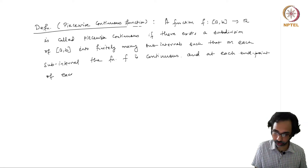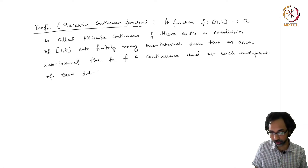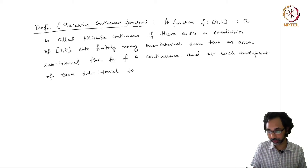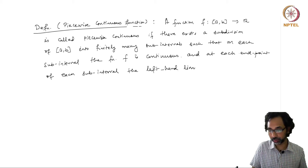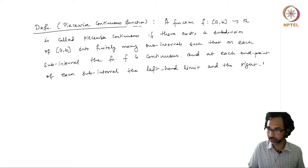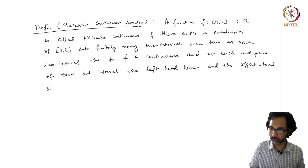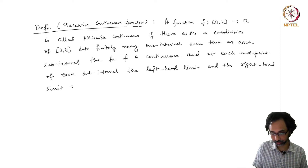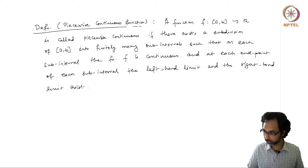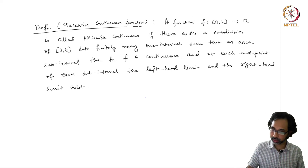at each endpoint of each subinterval, the left-hand limit and the right-hand limit exist, but they may not be equal. We have already seen an example.